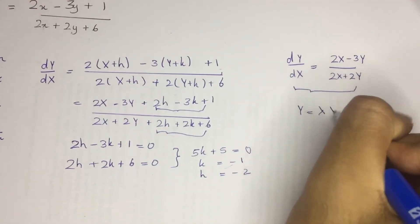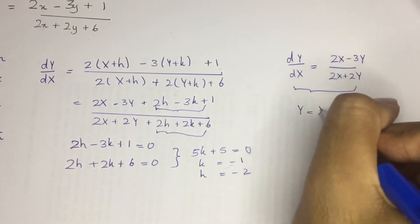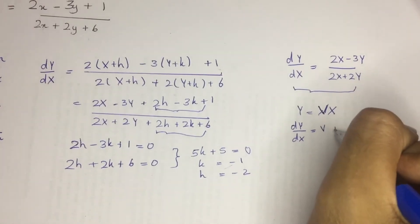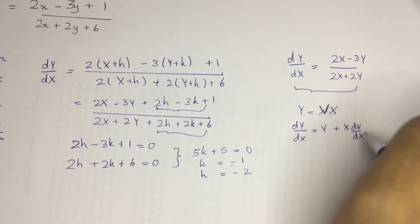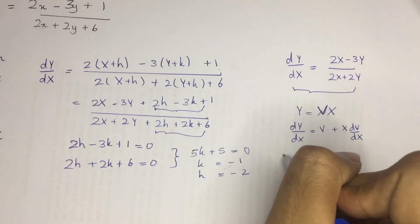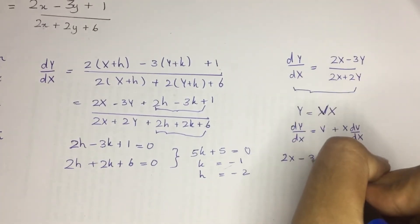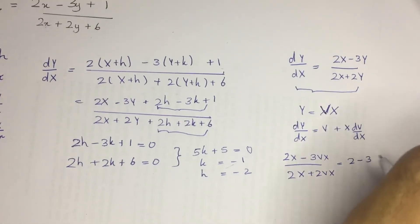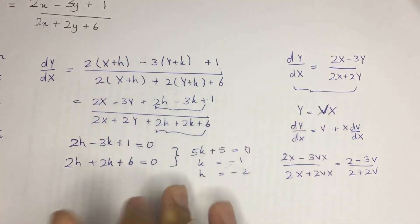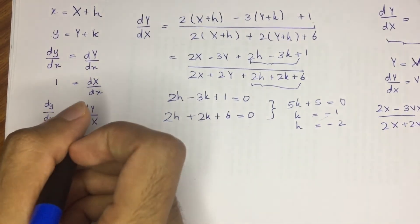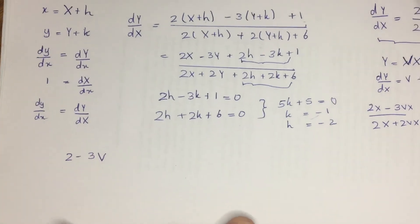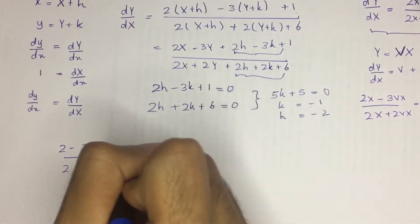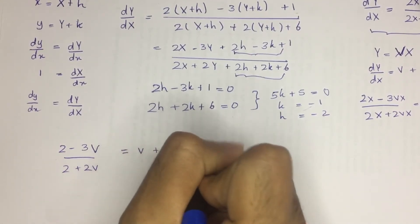We substitute Y equals vX, where v is a function of X. Differentiating gives dY by dX equals v plus X dv by dX. Substituting vX for Y in the right side gives (2X minus 3vX) divided by (2X plus 2vX), which simplifies to (2 minus 3v) over (2 plus 2v). Equating both sides: v plus X dv over dX equals (2 minus 3v) over (2 plus 2v).